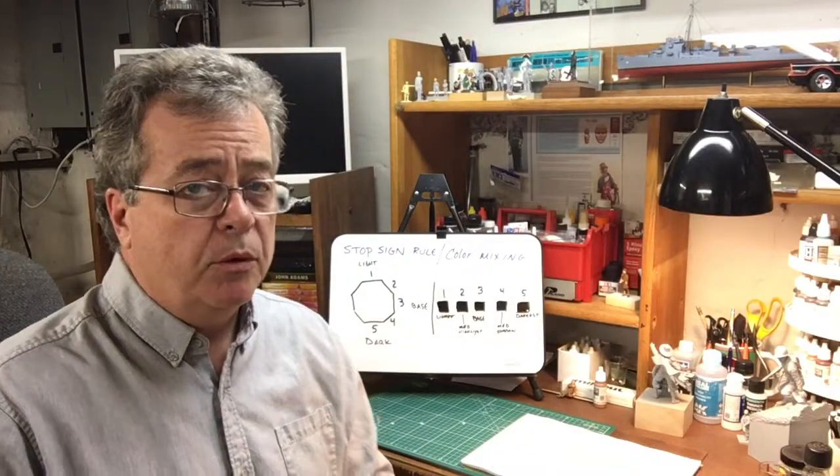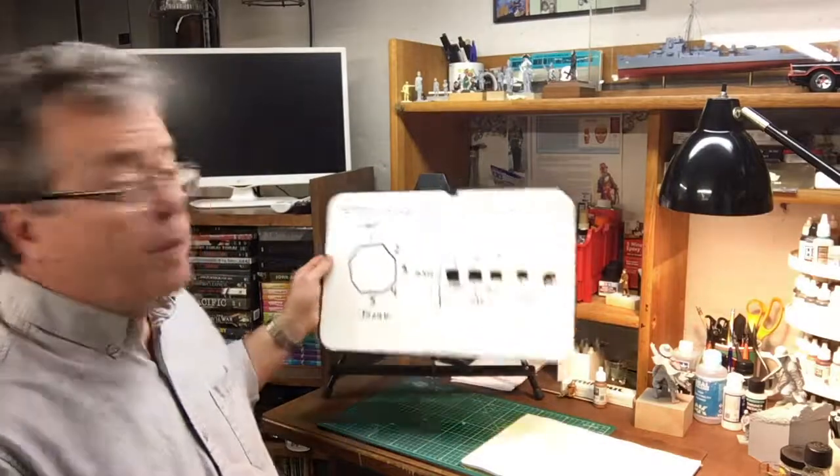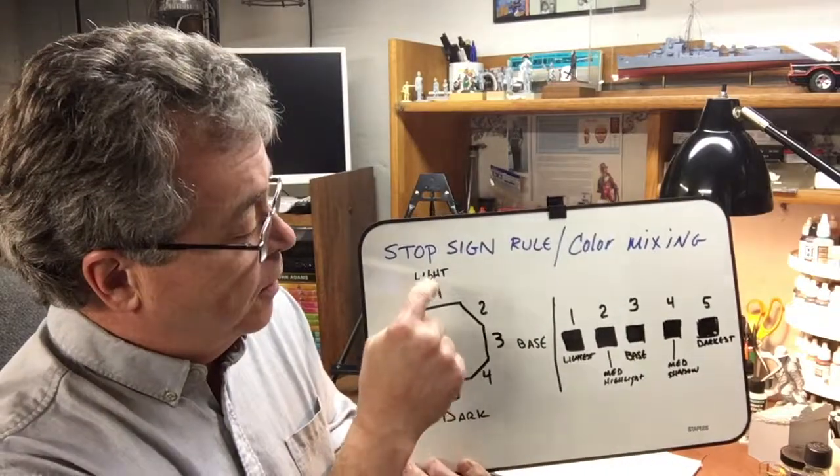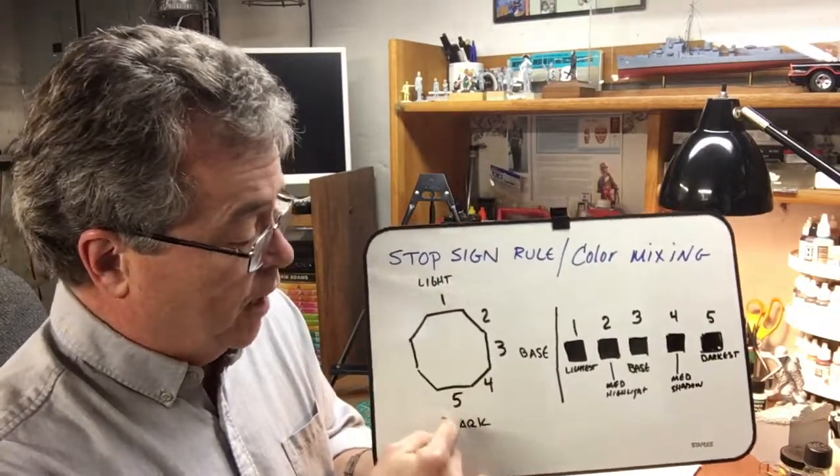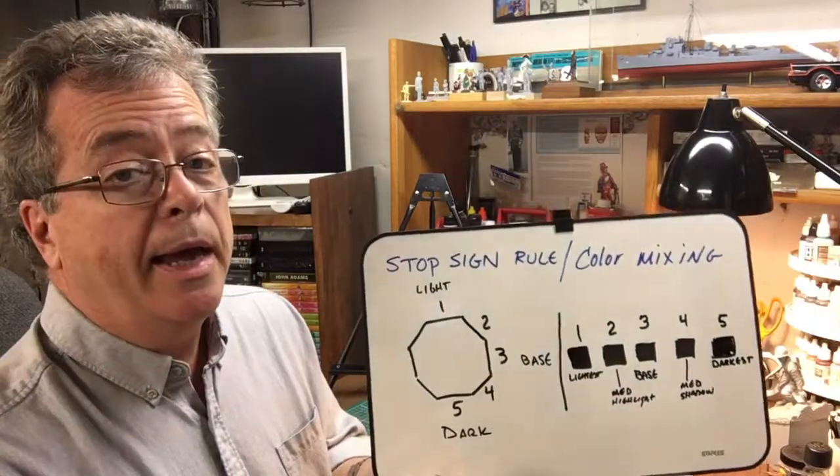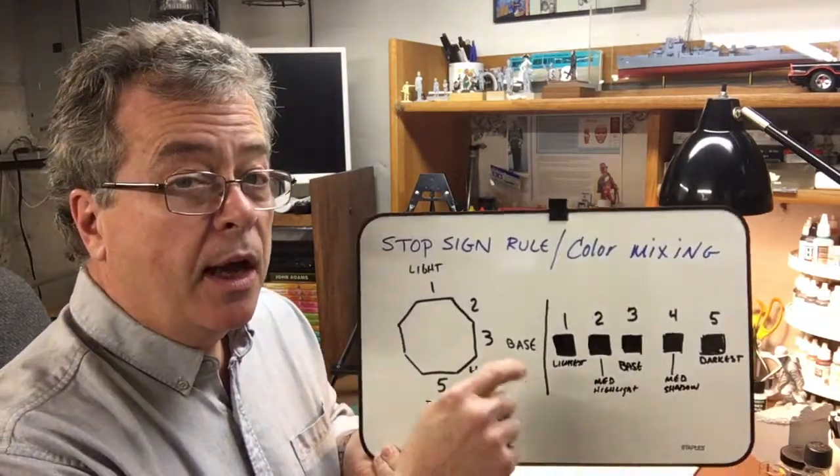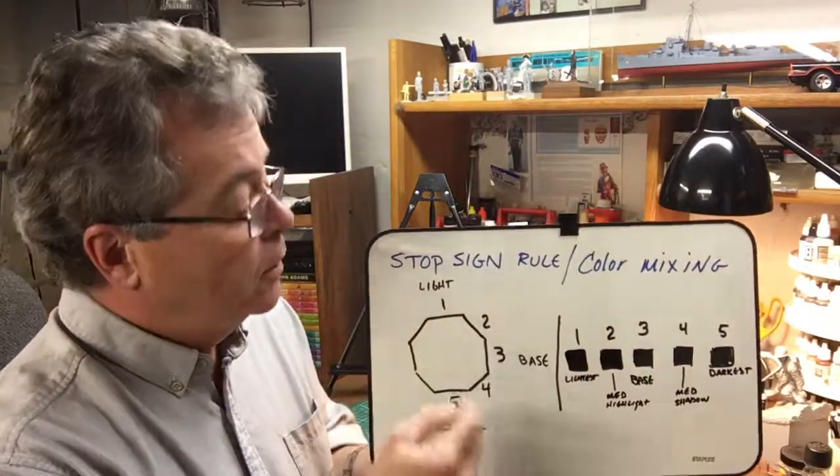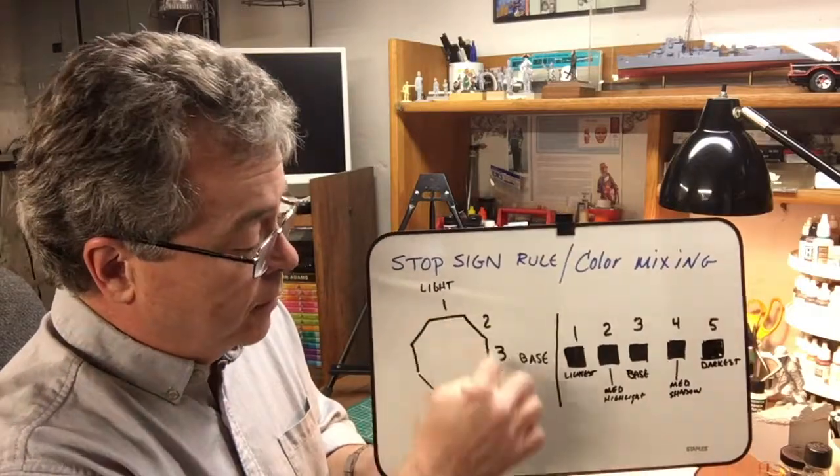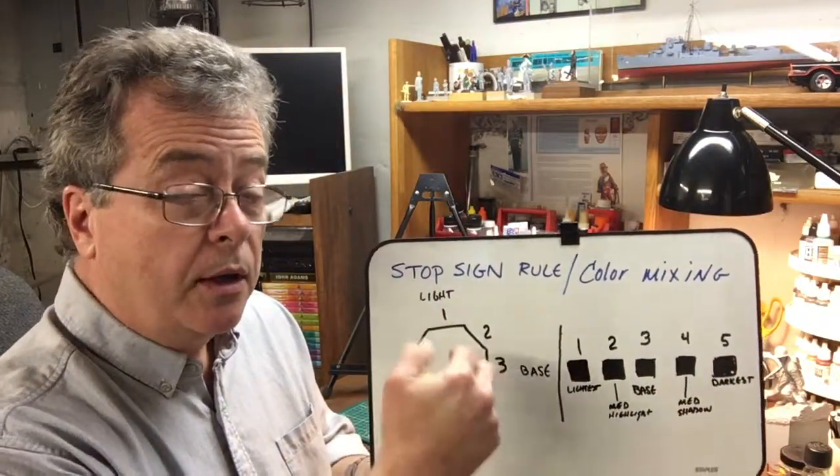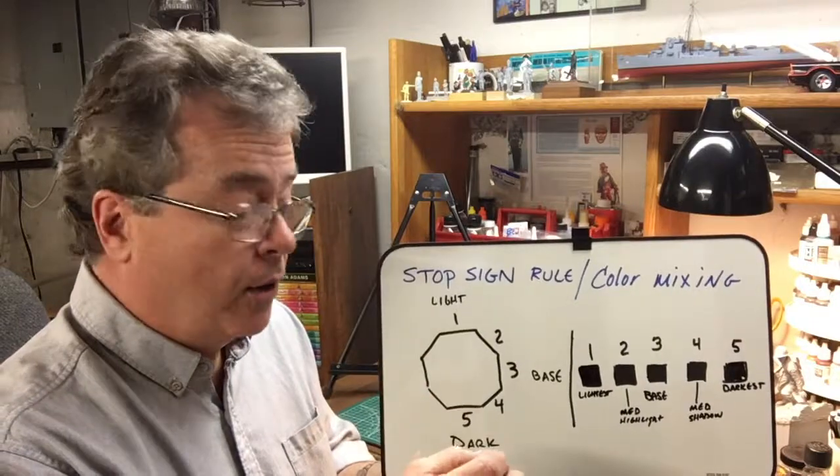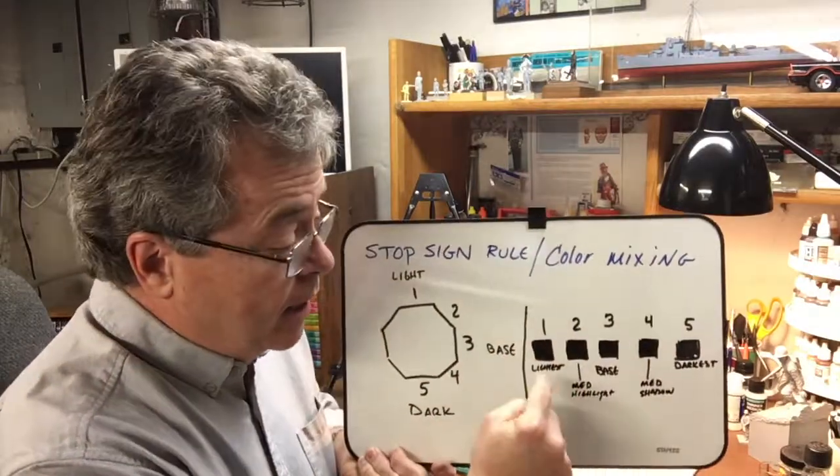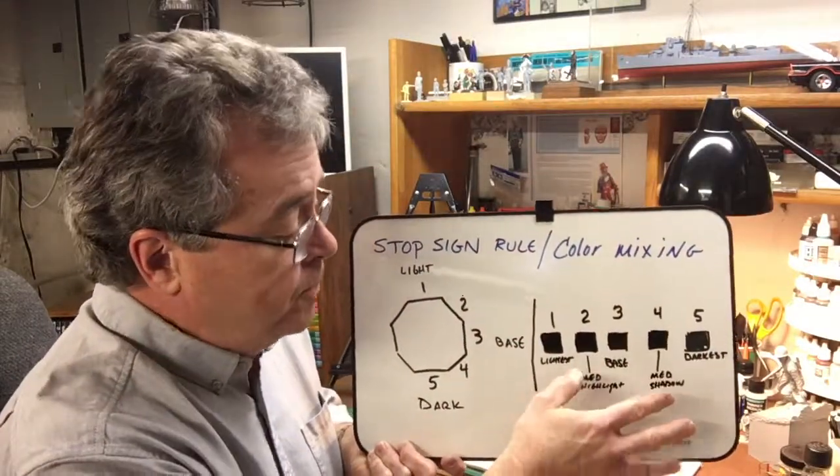Let's talk about color mixing in relation to the stop sign rule. So we basically we've looked at the stop sign rule which tells us where the highest highlights and the darkest shadows fall on a surface and what I'd like to show you is how you're going to mix your colors to correspond to that stop sign rule. So in other words we have one two three four five surfaces or colors to deal with. In other words each color we put on the figure we can have a possible five different shades of that color.